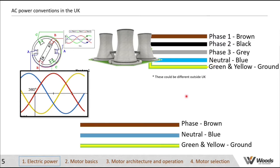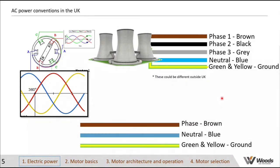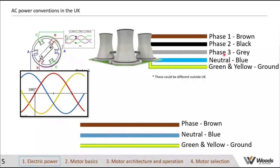In domestic homes you tend to have one live phase, a neutral, and a ground, all coming from the power station — mainly for domestic use. Three-phase is more widely used for industrial purposes, providing higher power for certain applications and a very good setup for motors. The cable colours — brown, black, grey for each phase, and blue and green/yellow — comply with UK wiring regulations.